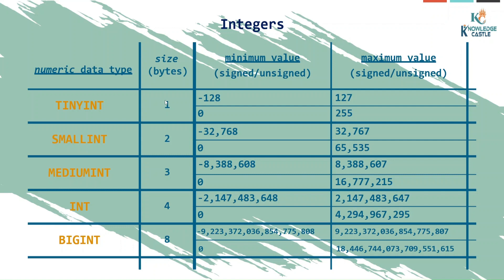For example, quantity sold — if you know it can never be more than 100, and no one can buy 255 items, then you can use tinyint to ensure your data table storage is well optimized.